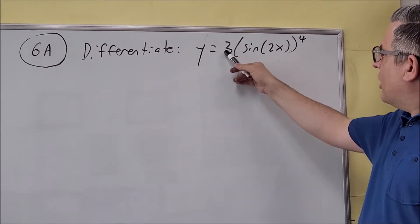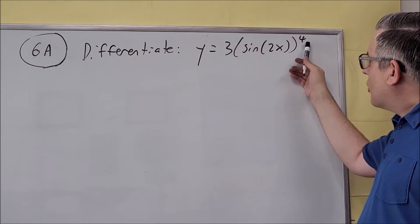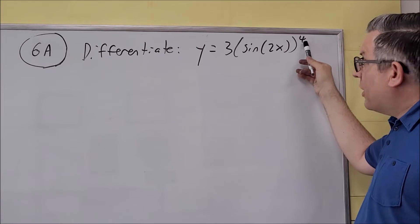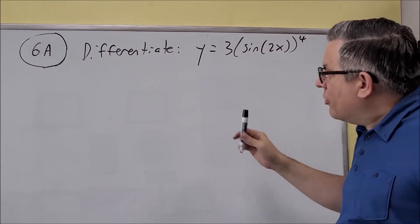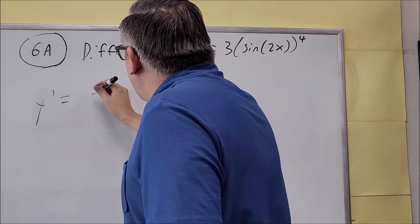So first, let's take care of the outside one. So this, there's a fourth power, so that fourth is going to come down, and then we'll make that a three. So that's the first thing we're going to do. So we have a three out there.